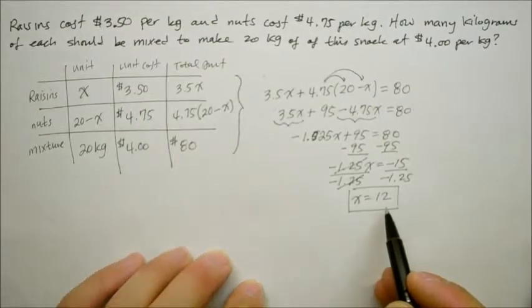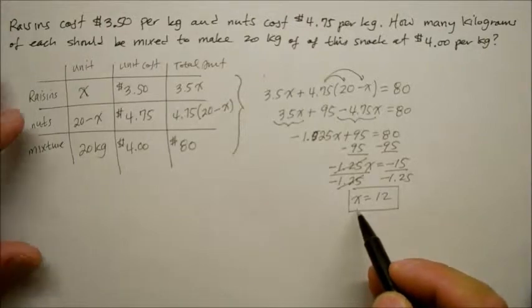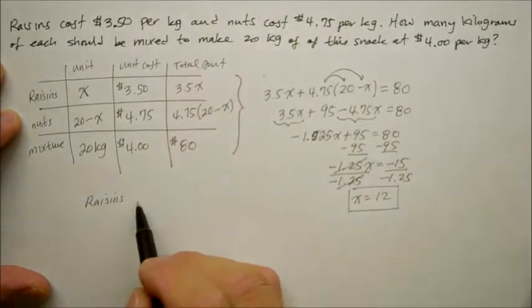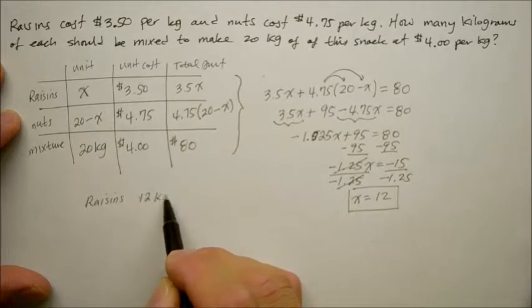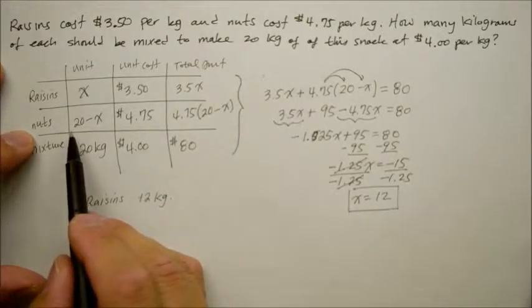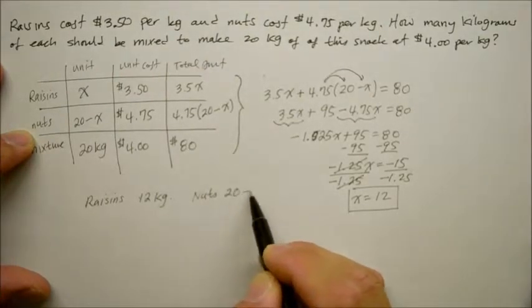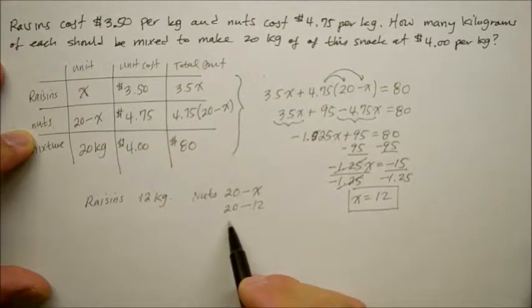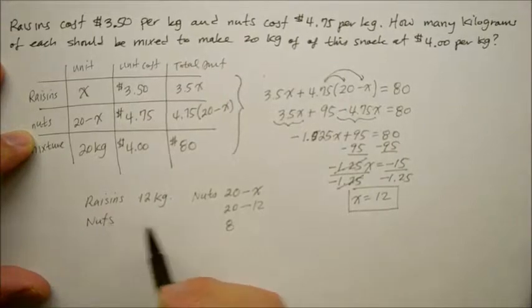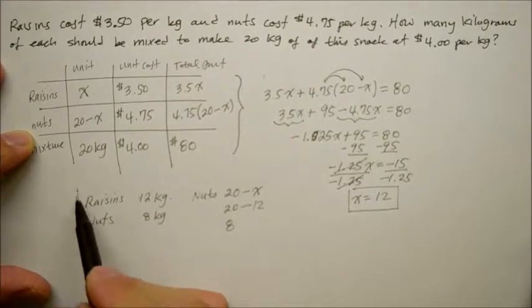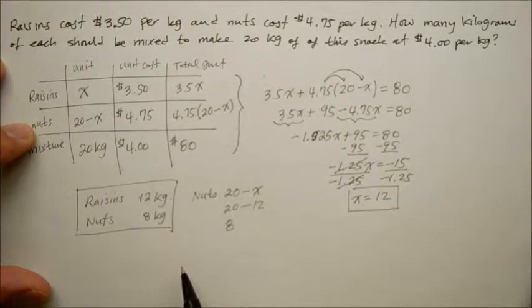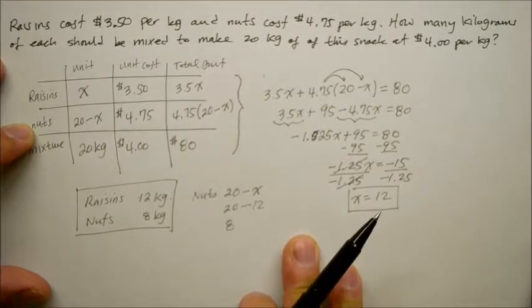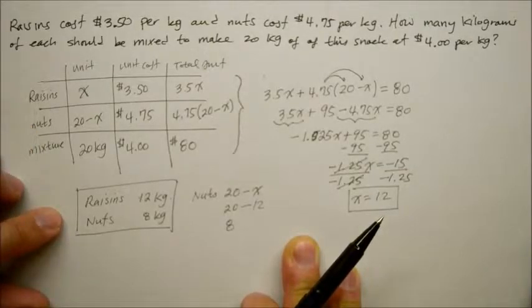So wait a minute, what is this 12? In this case, X is 12. Remember we assigned the X as raisins. So for raisins, we want 12 kilograms. However, the nuts is 20 minus the X. And so that becomes 20 minus the 12, which in turn becomes 8. So for the nuts, we want 8 kilograms. And that is the total weight for raisins and nuts we want, which will add up to become 20 kilograms at $4 for each kilogram at a grand total of $80. Customer's happy and you got exactly what you priced before. There's your mixture.